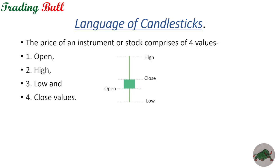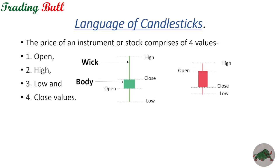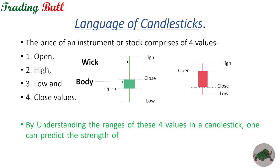When the price reaches a very high or very low value but does not sustain there, those regions are called wicks. Similarly, in a red candle, the open is at a higher level and the close is at a lower level. The regions where the price did not sustain result in thin wicks, and the price range within which it sustains is shown as the body.